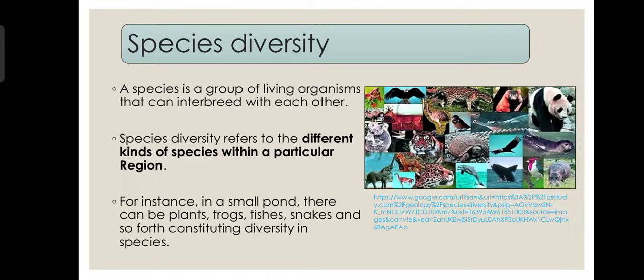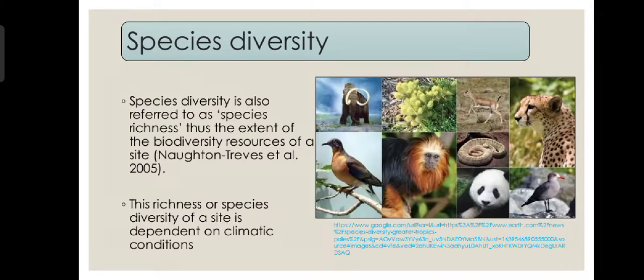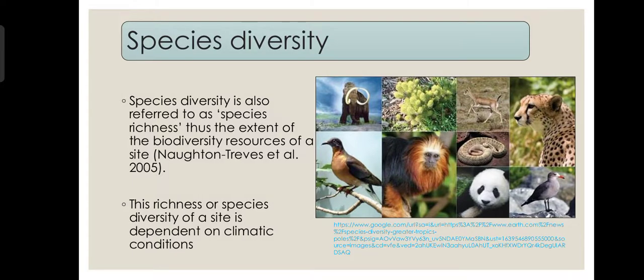Species diversity means different kinds of species residing in a particular area. For example, in a small pond there can be frogs, fish, eggs, and a few species of plants — that is diversity of species. Species richness or species diversity is dependent on the climatic conditions of the habitat. In deserts we find less diversity as compared to rainforests.